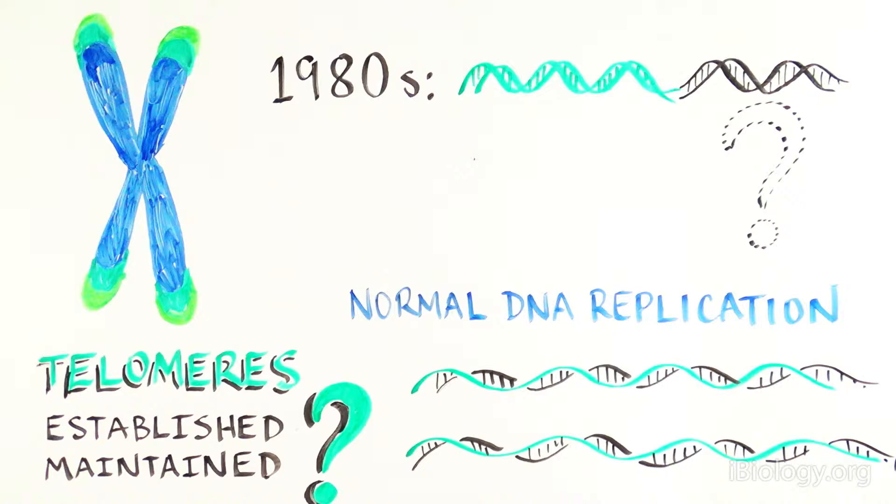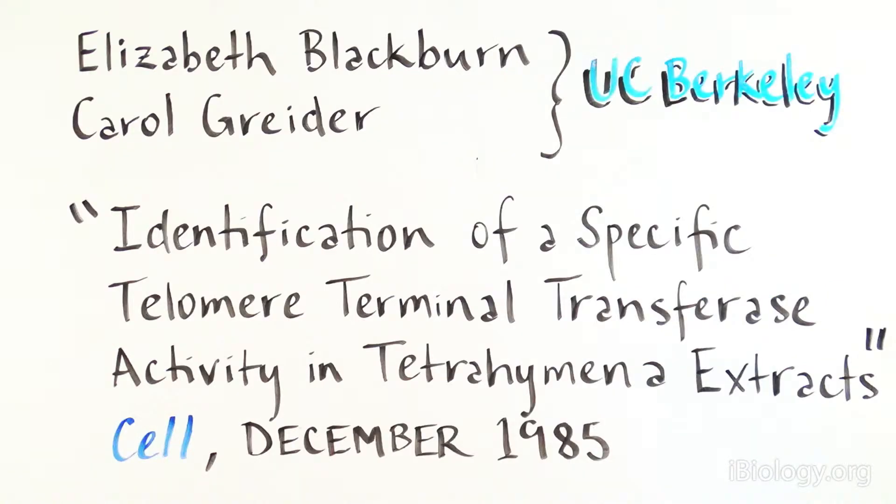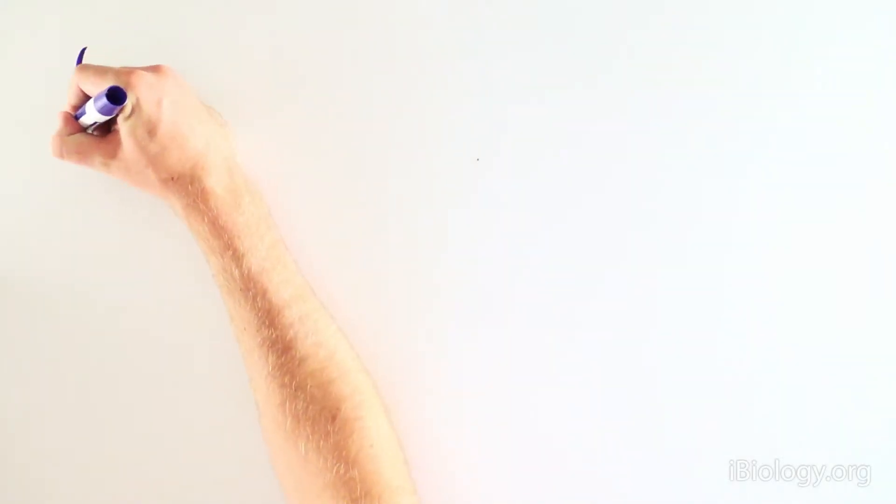In the 1980s, this was an important missing piece of biology that was quite a mystery. This puzzle was solved by Elizabeth Blackburn and Carol Greider at the University of California, Berkeley, and published in their paper titled Identification of a Specific Telomere Terminal Transference Activity in Tetrahymena Extracts in Cell in December 1985.